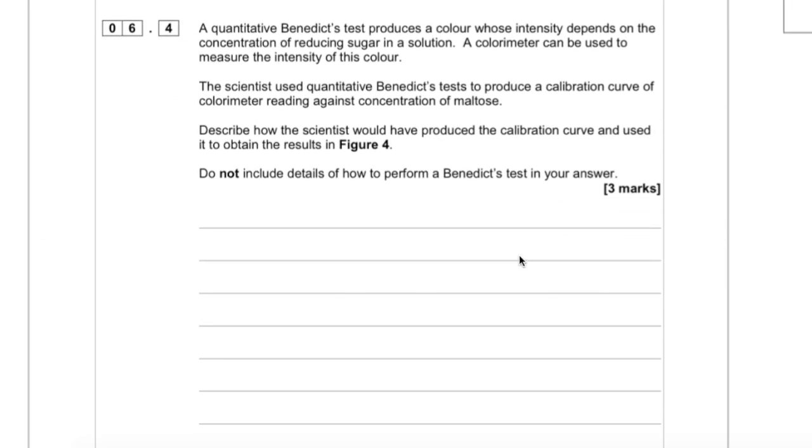Okay, the final part. Students found this really difficult, but it's not as hard as it seems. So let's have a read of it. A quantitative Benedict's test produces a color whose intensity depends on the concentration of reducing sugar in a solution. A colorimeter can be used to measure the intensity of this color. So that's just telling us what we already know about the Benedict's test.